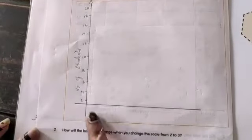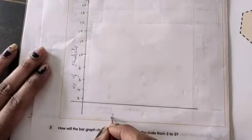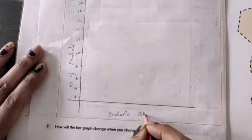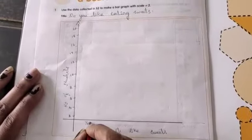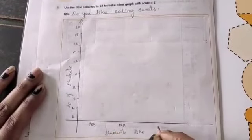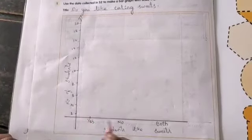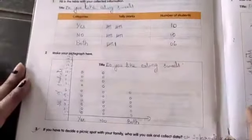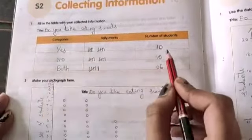So next, what we have to write here - here we have to write student like sweets. And here - yes, no, both, right? So now, with this information, we have to make a bar graph. So if you turn the page, 46, S2. So here, you can see here, they gave you categories - yes, no, both.